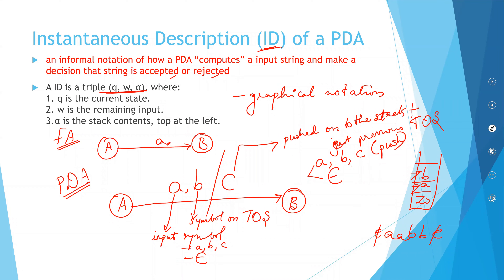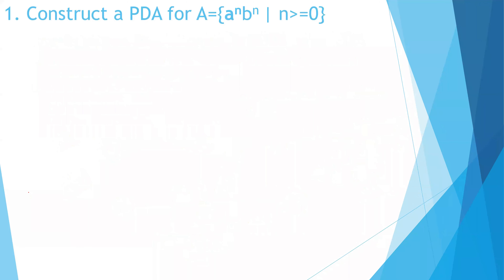A pop is performed when you have a match. So to summarize: the instantaneous description is a three-tuple where A is your input symbol, B is your top of the stack, and C is the element pushed onto the stack plus the just-previous top of the stack. We will see this in detail with an example.